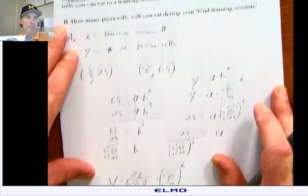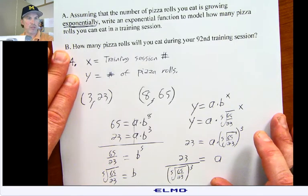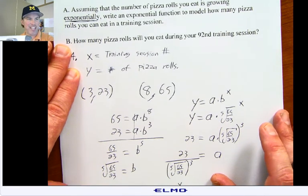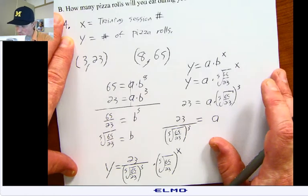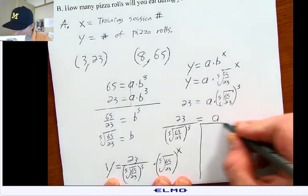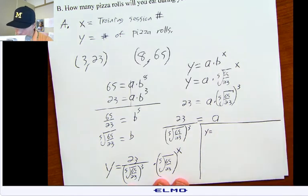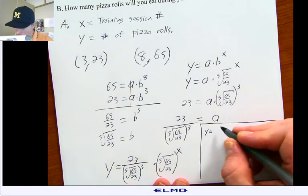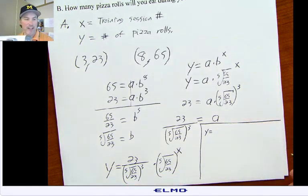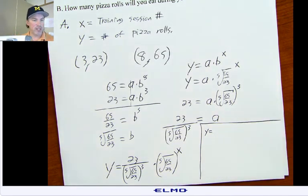Then you get into part B. How many pizza rolls will you eat during your 92nd training session? So I could do that right here on the side. I have to write it all out again. Or do I? No, let's start using our calculator.